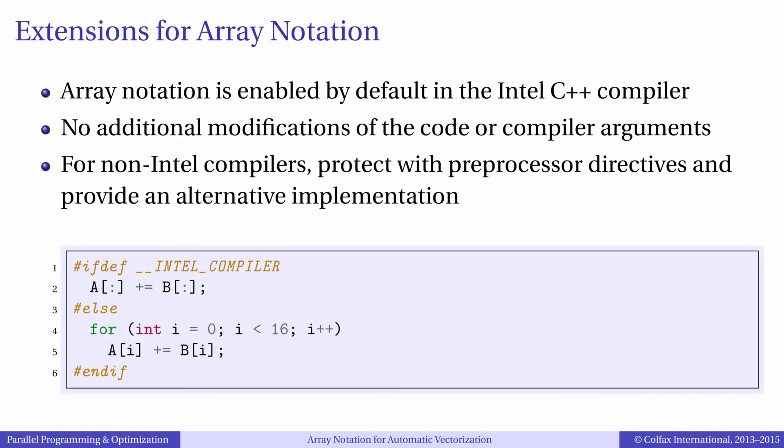Array notation in C and C++ is enabled by default in the Intel compilers and does not require additional compiler arguments. However, if you are writing code that you would like to make portable across different compilers, you may want to protect expressions with array notation using the preprocessor macro __INTEL_COMPILER as shown in this listing.